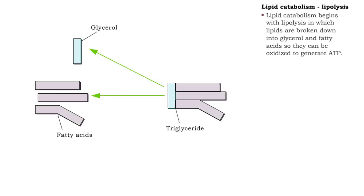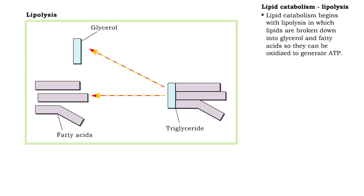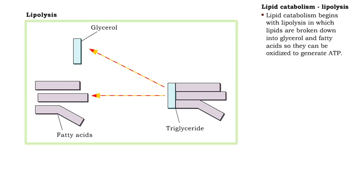Lipid catabolism begins with lipolysis, the process that breaks down lipids into fatty acids and glycerol. Lipids must be broken down before they can be oxidized to generate ATP in the Krebs cycle.